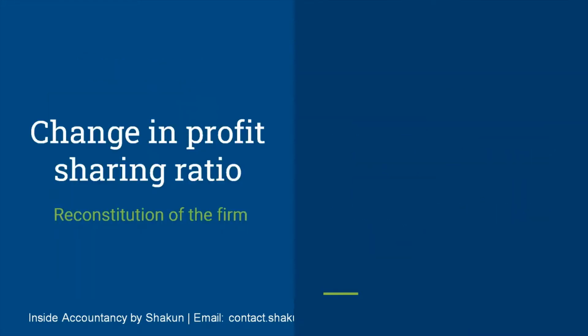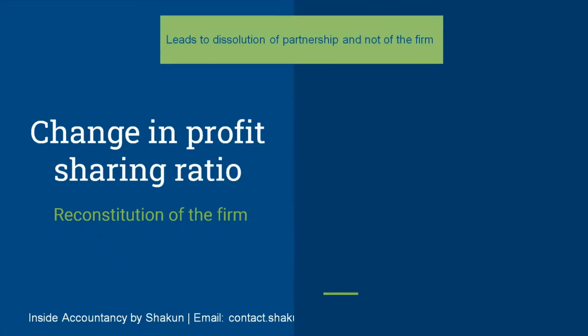We have already talked about change in profit sharing ratio. Change in profit sharing ratio means when the existing partners decide to change the ratio in which they share profits and losses, which leads to the reconstitution of the firm — where reconstitution means the dissolution of partnership and not the dissolution of the firm. Whenever there is any reconstitution of the firm on account of change in profit sharing ratio, certain issues have to be considered.